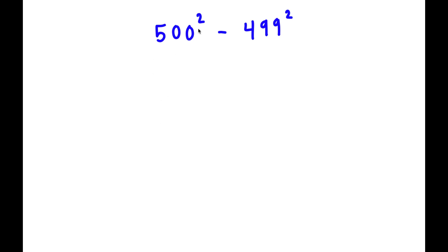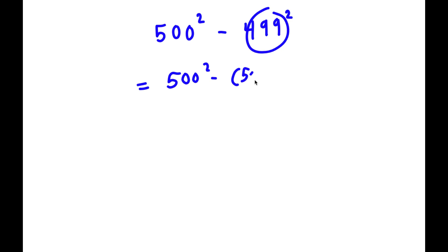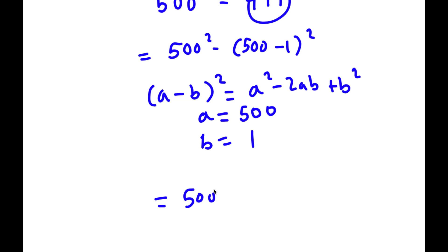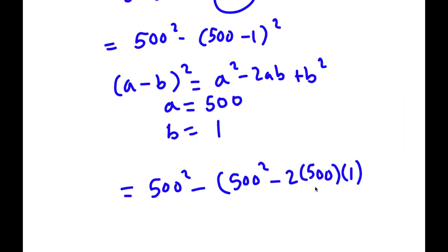In this problem I have 500 squared minus 499 squared. I'll rewrite 499 as 500 minus 1, giving 500 squared minus (500 minus 1) squared. Using the identity (a minus b) squared equals a squared minus 2ab plus b squared, with a equals 500 and b equals 1, this becomes 500 squared minus (500 squared minus 2 times 500 times 1 plus 1 squared).